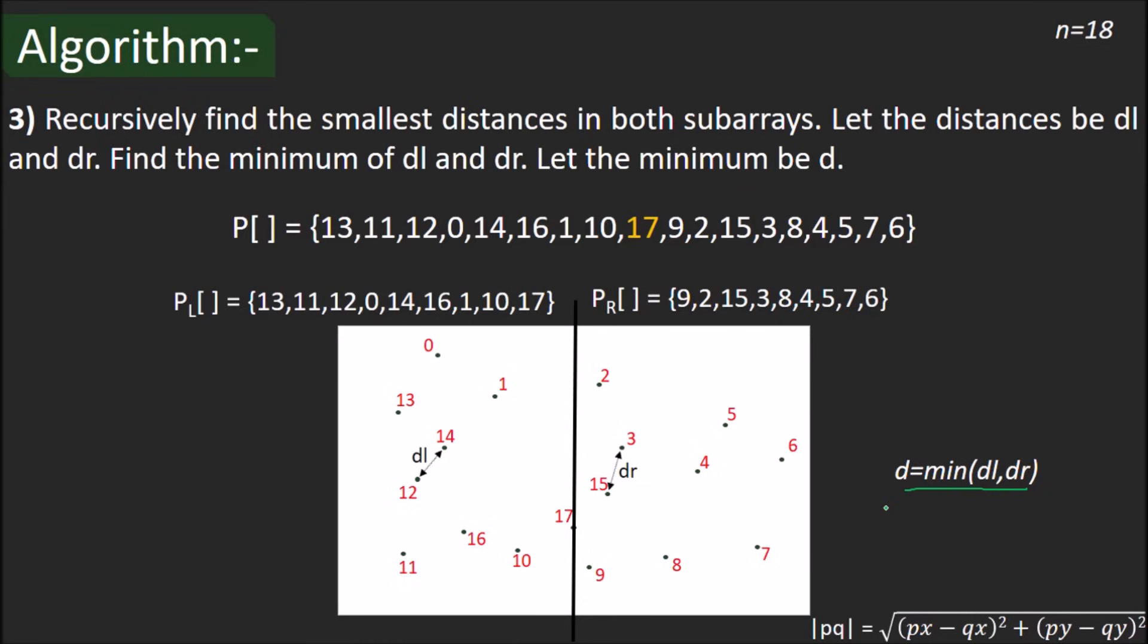You may have noticed although we have found the closest pair of points in both halves, what about the points having one point on either side? That is, we haven't calculated the distance between the points when one belongs to the left half and other belongs to the right one. For example, points 1 and 2, points 17 and 15, etc.